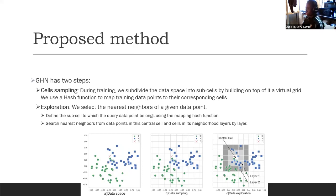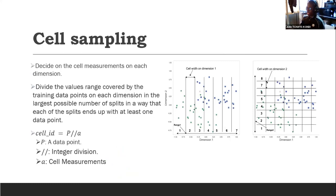How do we build our virtual grid to make sure that the data is well distributed across each cell and not harmful for algorithm performance and accuracy? We propose a simple mechanism that decides on the cell measurement on each dimension. The idea is to divide the value range covered by the training data points on each dimension into the largest possible number of splits, such that each split ends up with at least one data point.